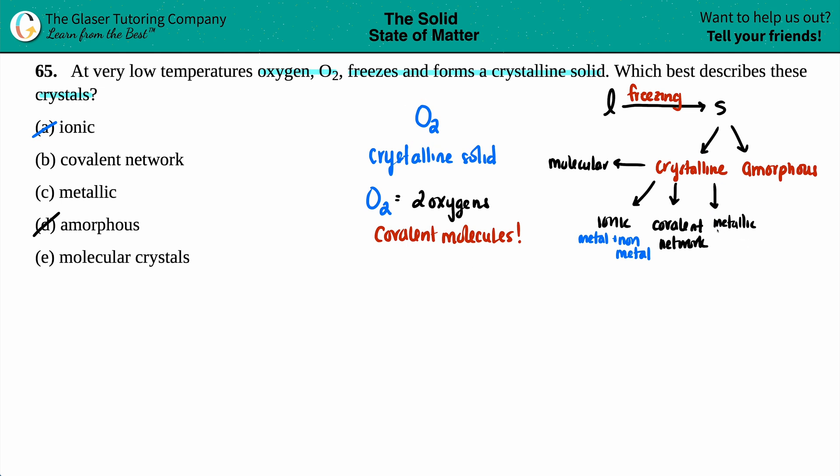The same thing with metallic. I mean, the first part of the word metallic is metal and there's no metals here. So we could cancel out C. So now we're down to B and E, covalent network and molecular crystals. These are the two that are dealing with covalent molecules or things that are covalent, all nonmetals.